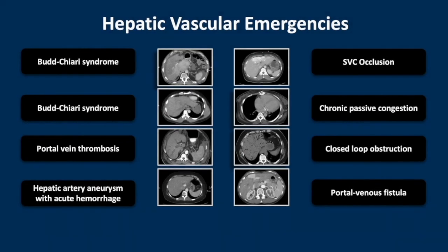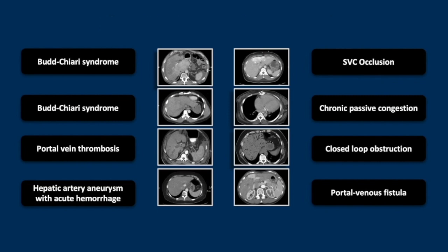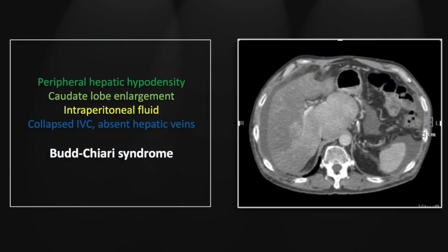Our topic for this session is hepatic vascular emergencies. We'll begin with two cases of Budd-Chiari syndrome. The first is the acute presentation of chronic Budd-Chiari. Chronic Budd-Chiari usually behaves more like veno-occlusive disease, with inflammation and occlusion of the hepatic veins and narrowing of the IVC, resulting in abnormal perfusion of the right and left liver lobes.